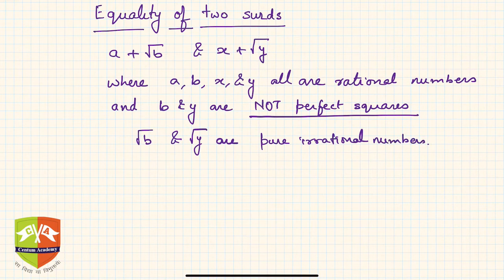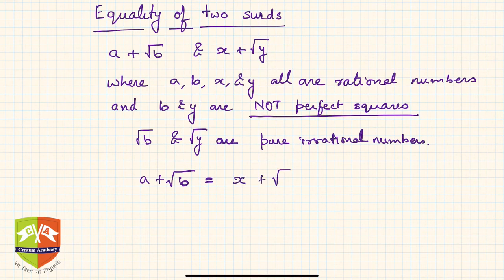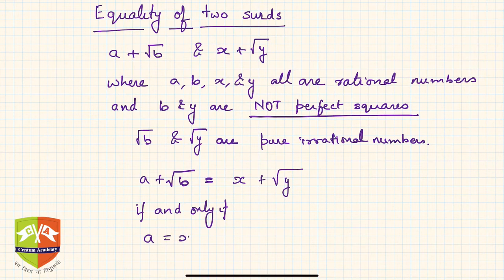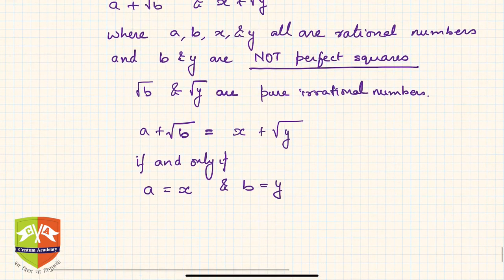So we say that a plus root b is equal to x plus root y if and only if a is equal to x and b is equal to y. This is what is meant by equality of two surds. Let's take an example.